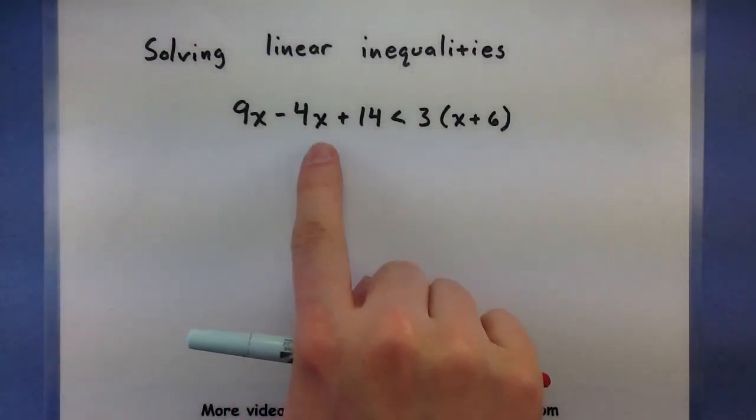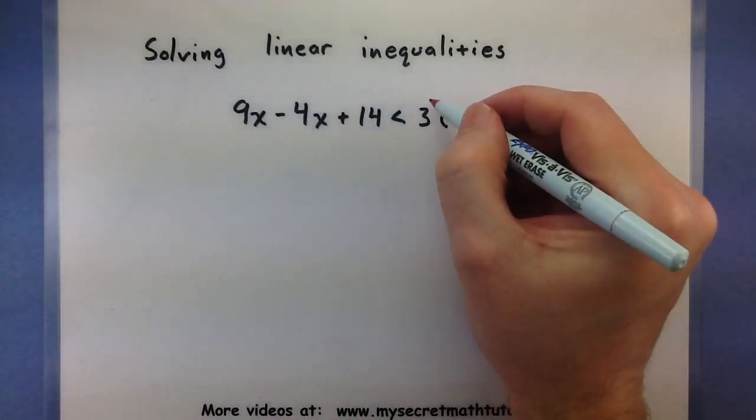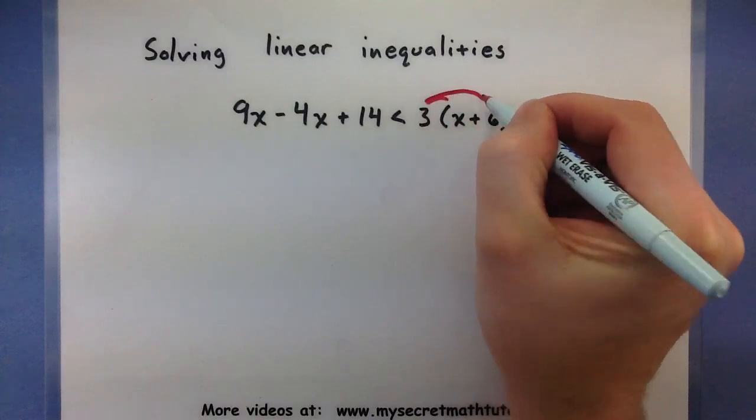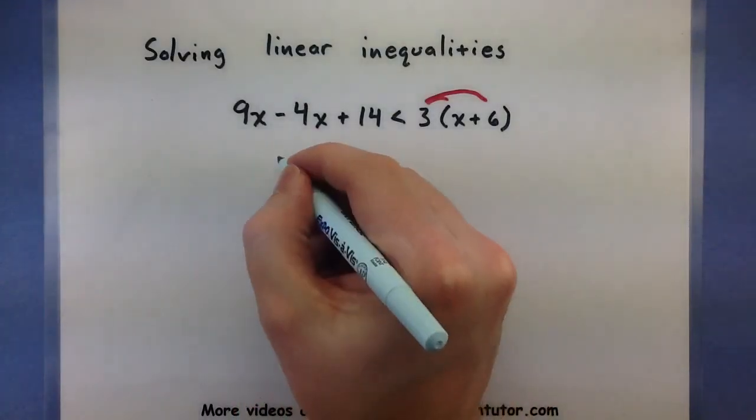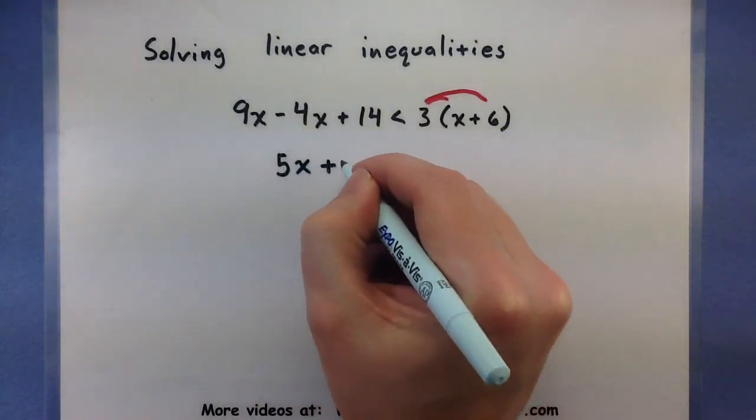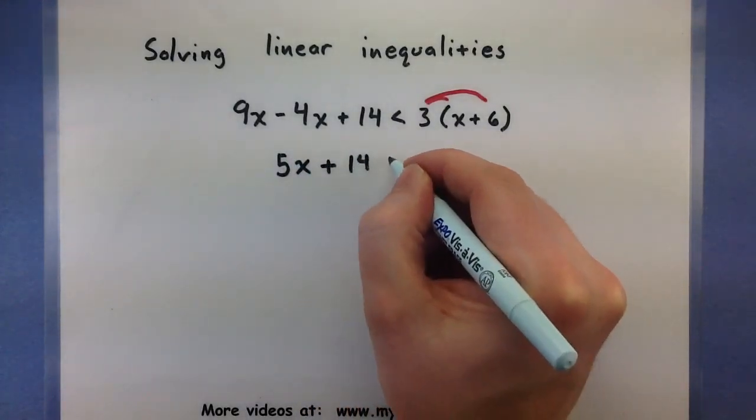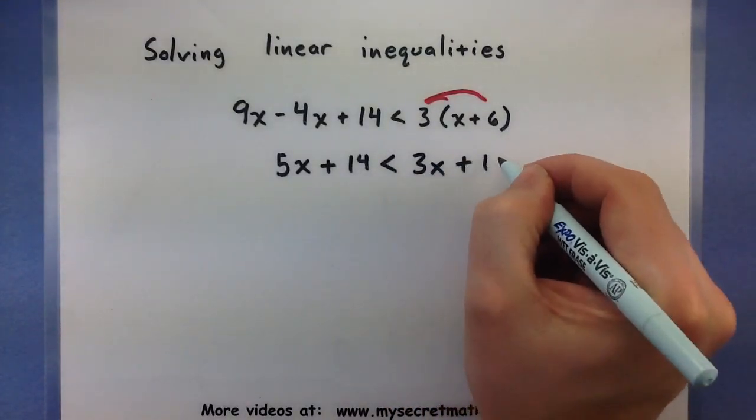First thing I want to do is try and get these x's together. I can see that one of them is stuck inside parentheses, so I will distribute through to free that guy up. I'm also going to combine these two x's here, since they're next to each other anyway. So 5x plus 14 is less than 3x plus 18.